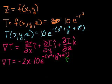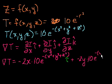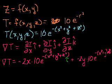Now we do the same for the y direction. The partial derivative of the inner function with respect to y gives minus 2y. The derivative of the whole thing is itself again, so we get minus 2y times 10e to the minus x squared plus y squared plus z squared, all times the unit vector j.